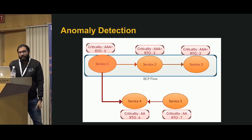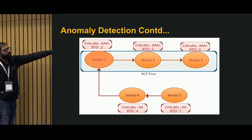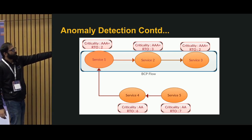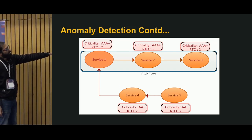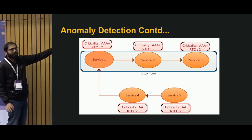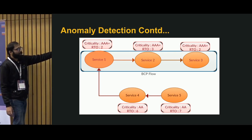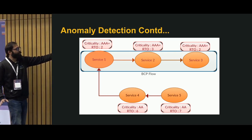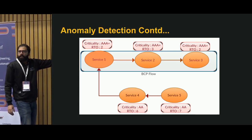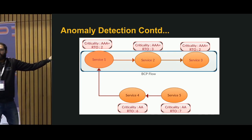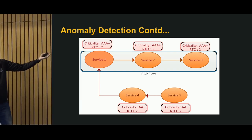We tag each node in the service graph with criticality and RTO. This also enables anomaly detection. For example, if service 3 has an RTO of 2 hours and service 2 has an RTO of 3 hours, then service 1 which depends on both cannot have an RTO of 2 hours — it has to be at least 5 hours. We can detect these anomalies and tell the developer or architect that their declared RTO is not achievable given the dependencies.